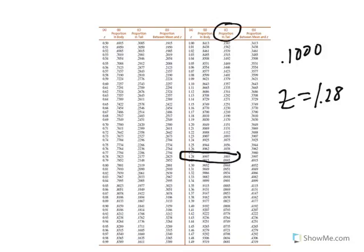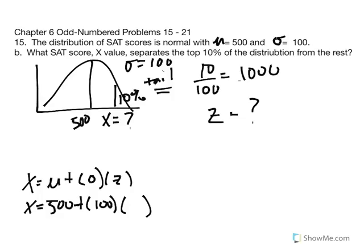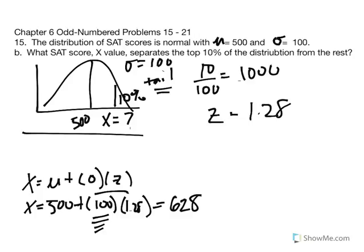We use Z equal to 1.28 in our equation. Our goal is to find the X value that represents 1.28 standard deviation units above the mean. So X equals 500 plus 100 multiplied by 1.28 — that is, 1.28 times 100 added to 500 — and we get 628.